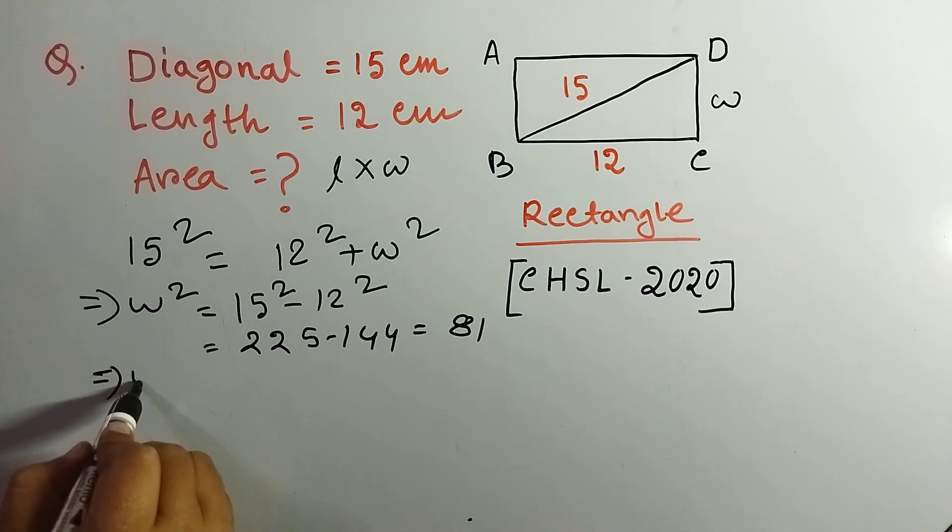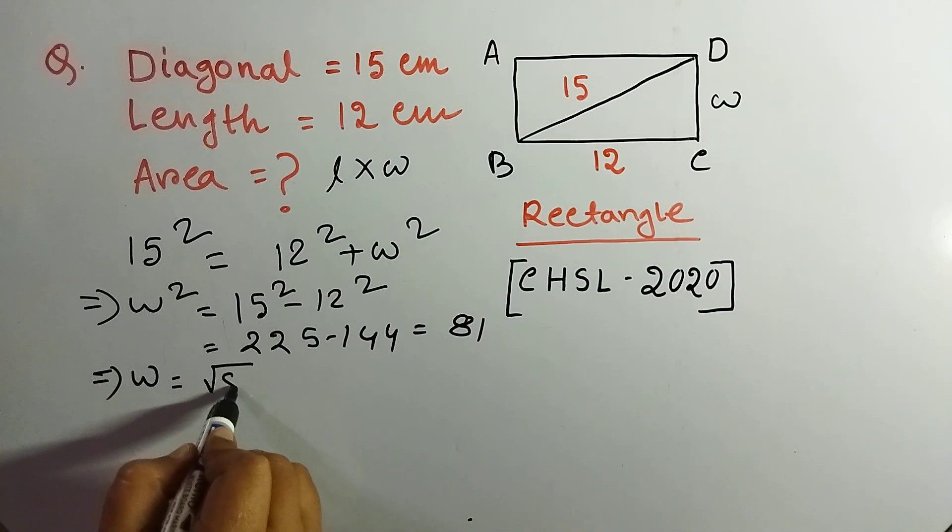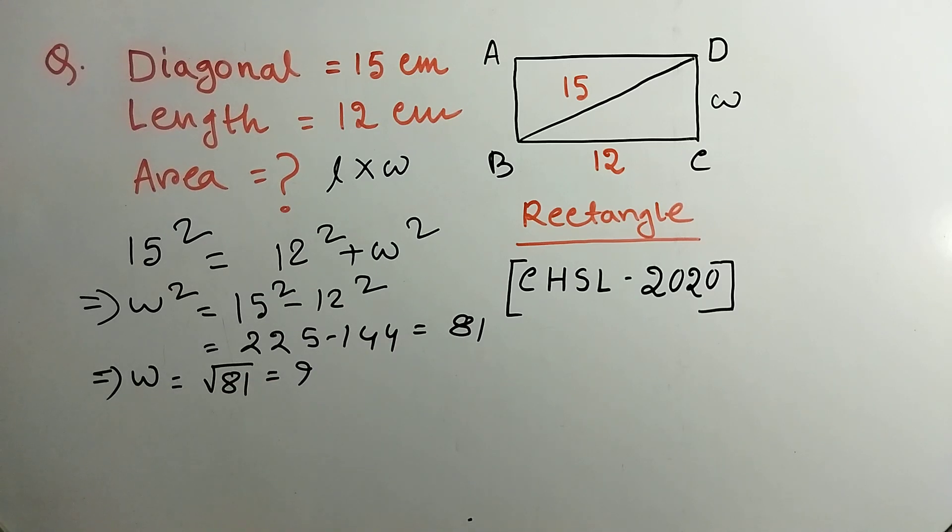So W is root over of 81, that is 9. So we have got the value of width, that is 9.